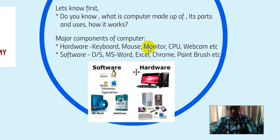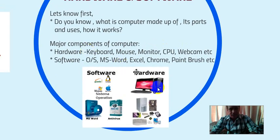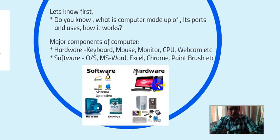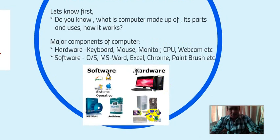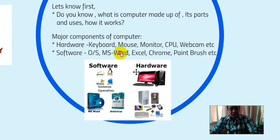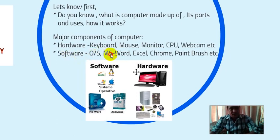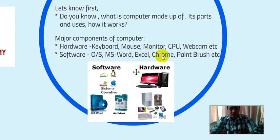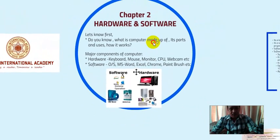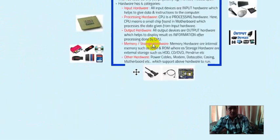In hardware there are keyboard, mouse, monitor, CPU, webcam, and so on. Hardware is divided into two parts: internal, which is inside the CPU casing, and external, like keyboard, mouse, webcam, and scanner. Software is what makes the hardware work — for example, the operating system, Microsoft Word, Excel, and Paint.